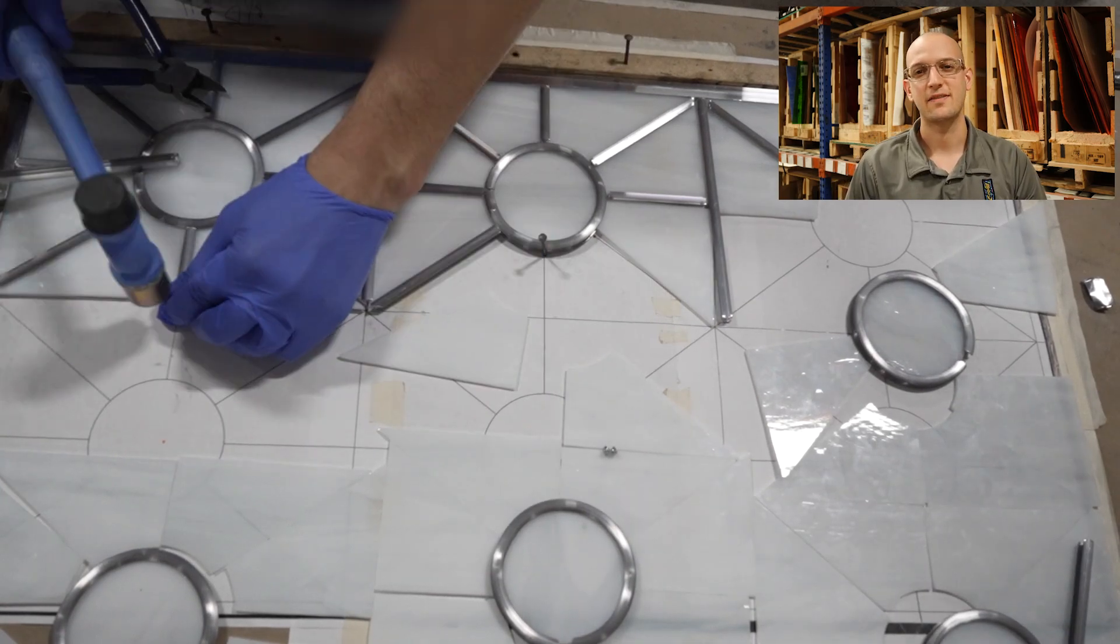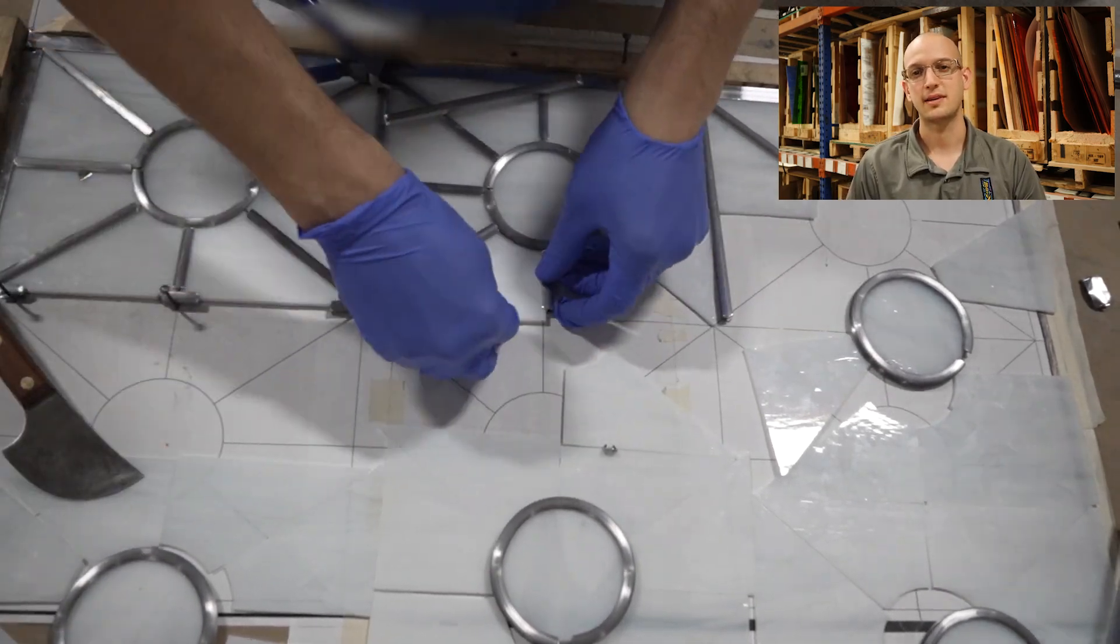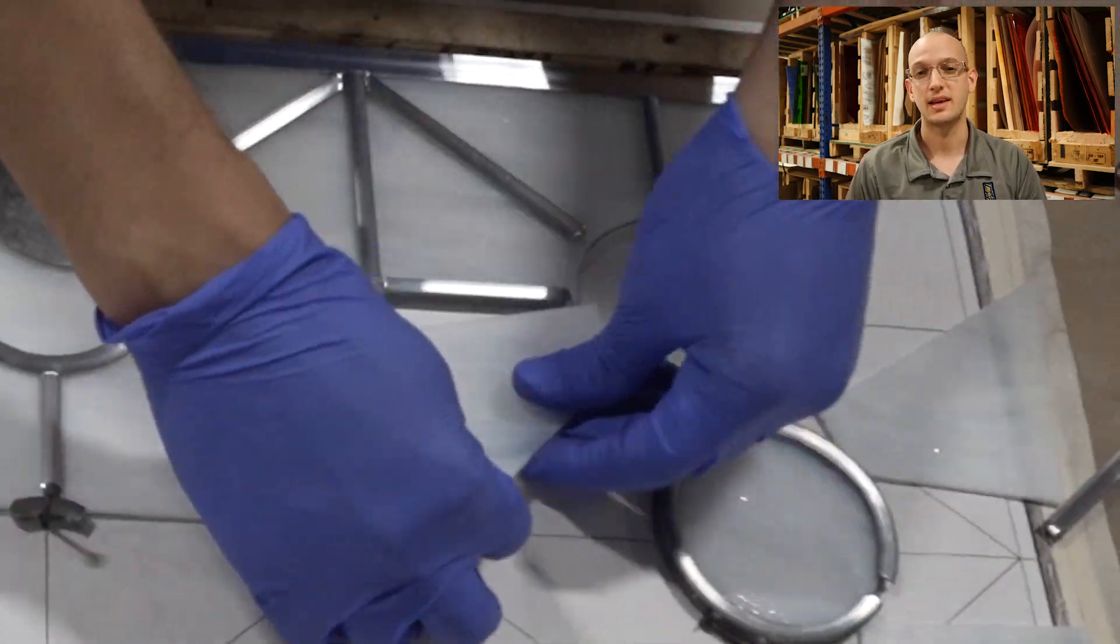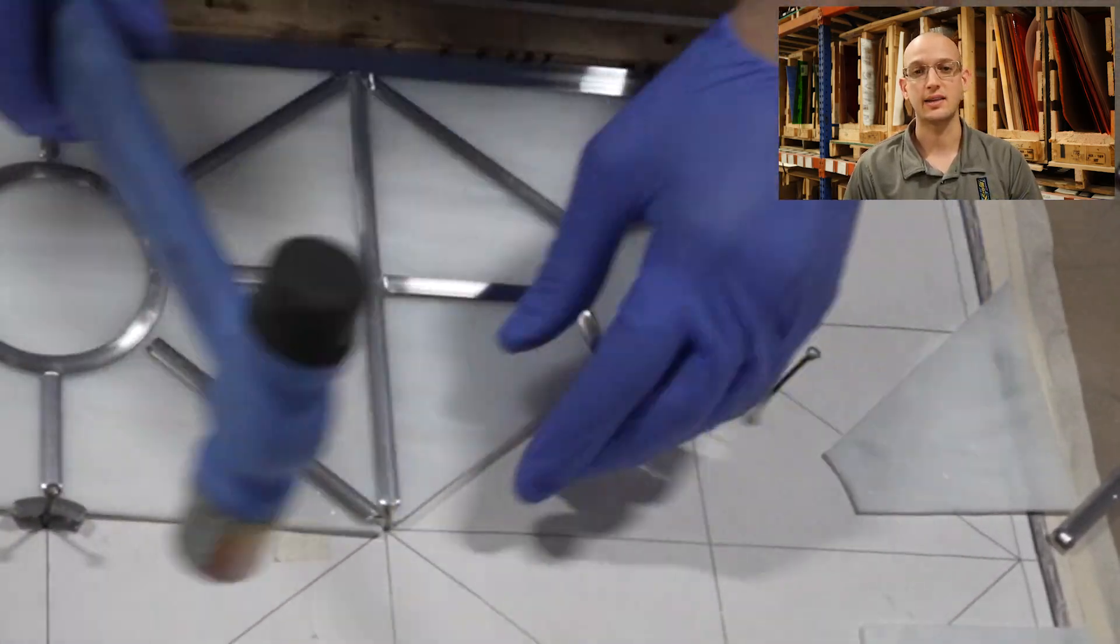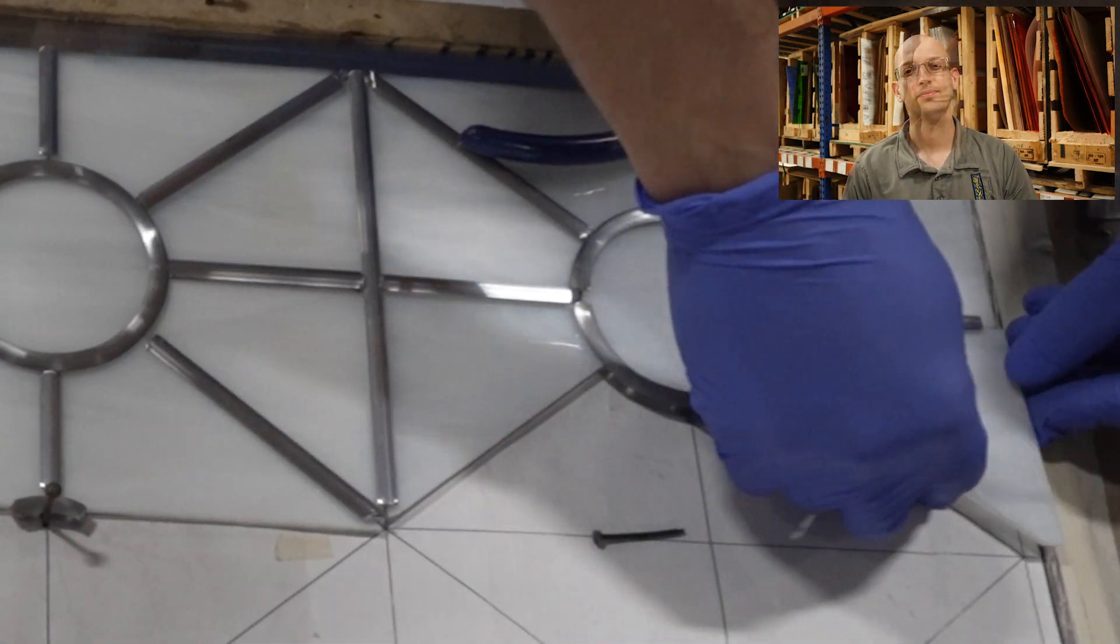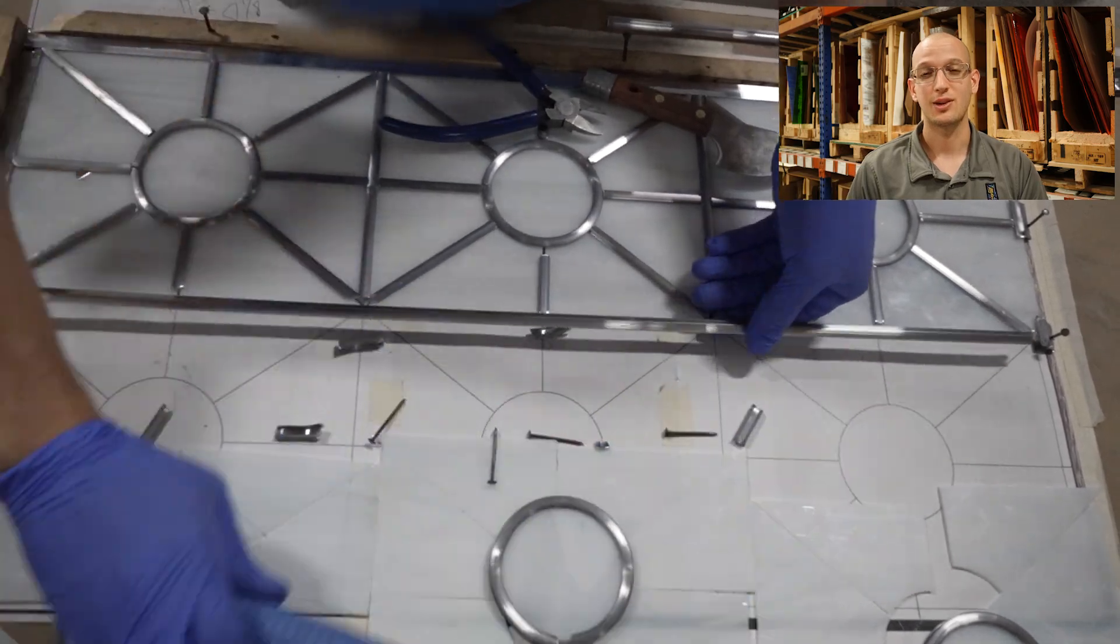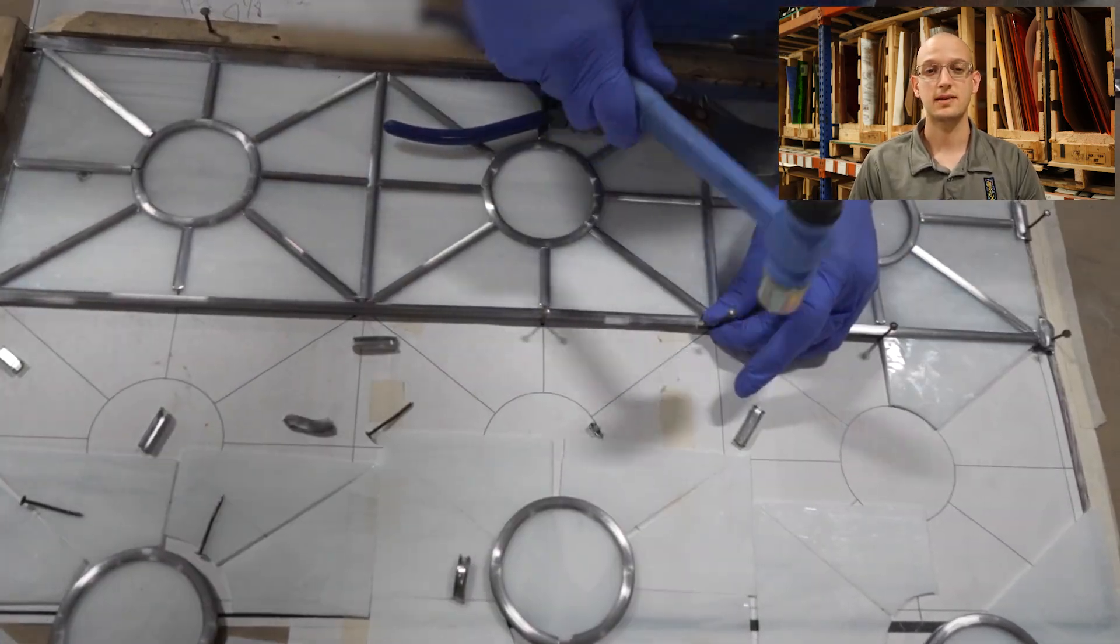The lead assembly is my favorite part of this process because you start to see the panel coming to life. This is the first time you are seeing the glass holding together with the lead lines instead of loosely on the pattern. This glass does have a slight direction in its color and texture, so it's important to orient all the pieces the same way.